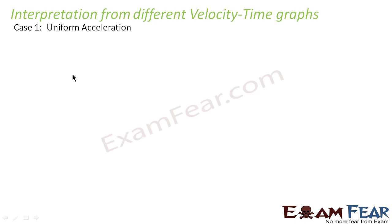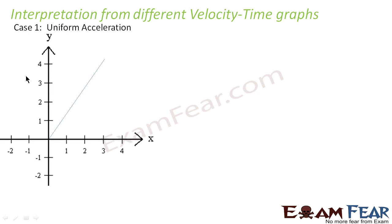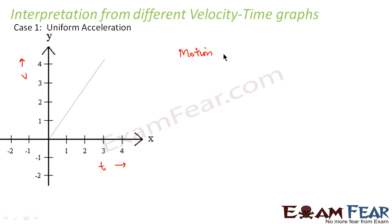The first scenario we consider is uniform acceleration. This is our velocity-time graph — this is velocity, this is time. If the velocity is increasing uniformly with time, in that case the acceleration would be constant. That means the acceleration will remain the same throughout, and this graph also indicates that the motion of the particle takes place in the positive direction.